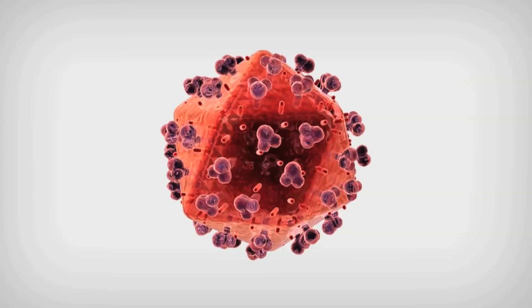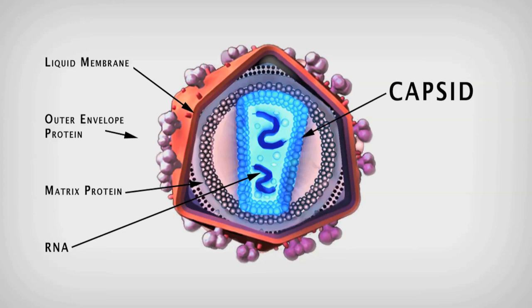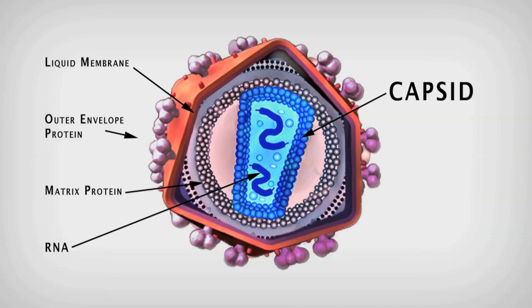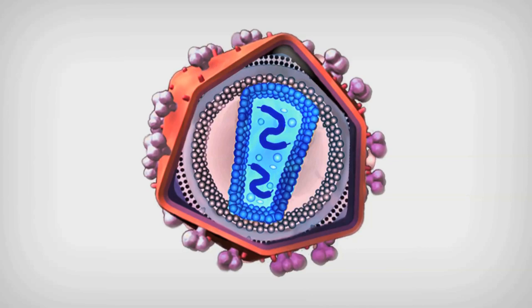A virus that infects a cell contains at its core genetic material that it tries to smuggle into the cell, and this genetic material is packaged in what is called a capsid. That capsid is a very strong container for the genetic material, protected as long as the virus is outside of a cell. But once the virus enters and infects the cell, the capsid has to become a very quickly opening container.